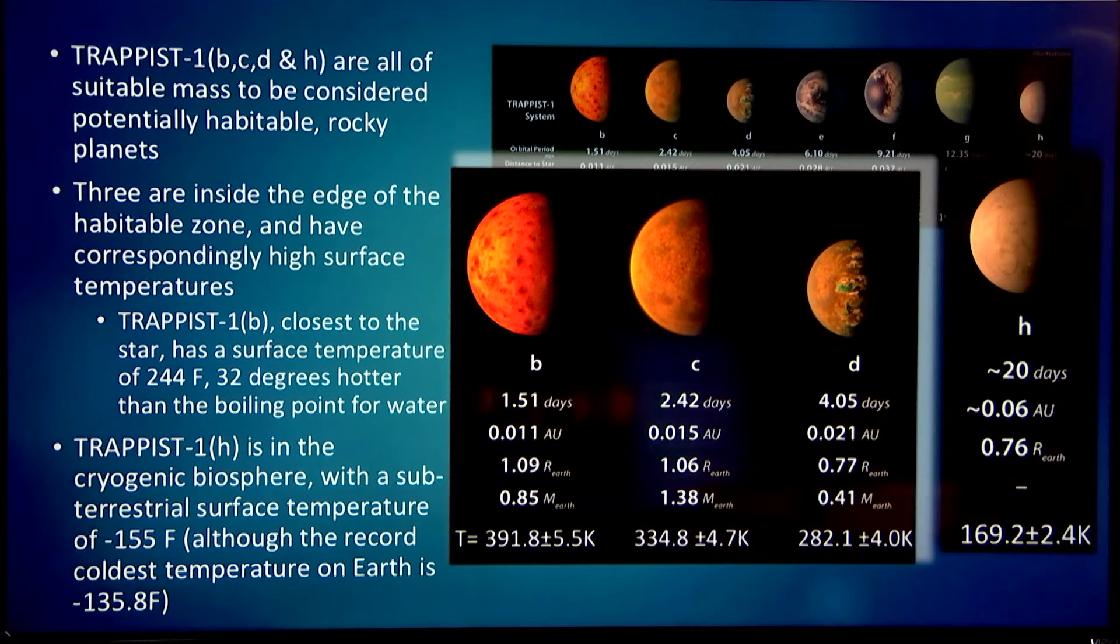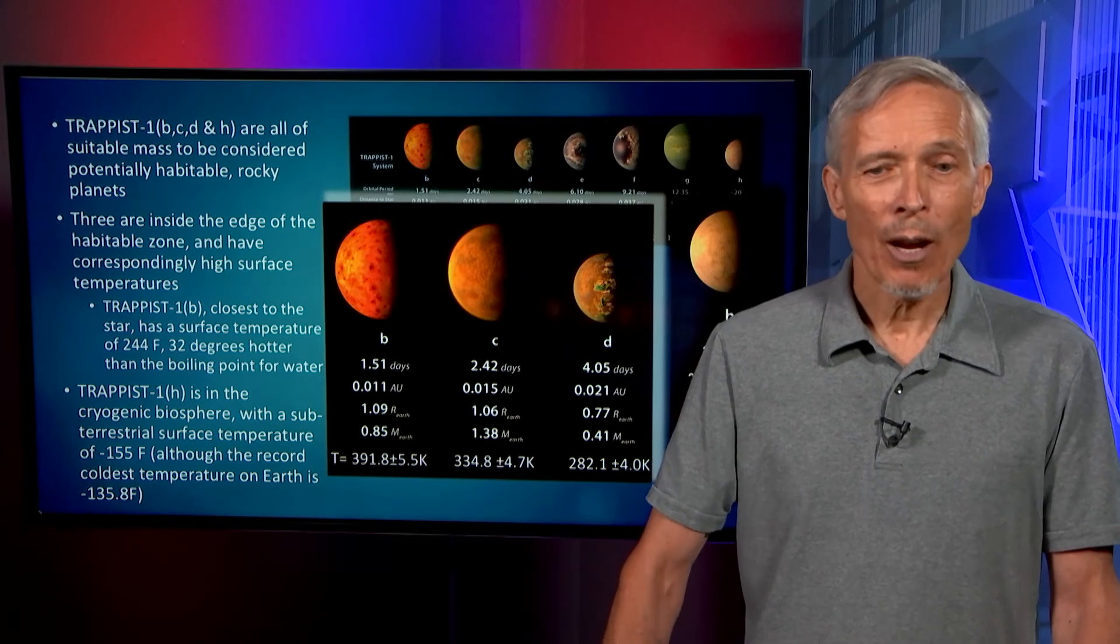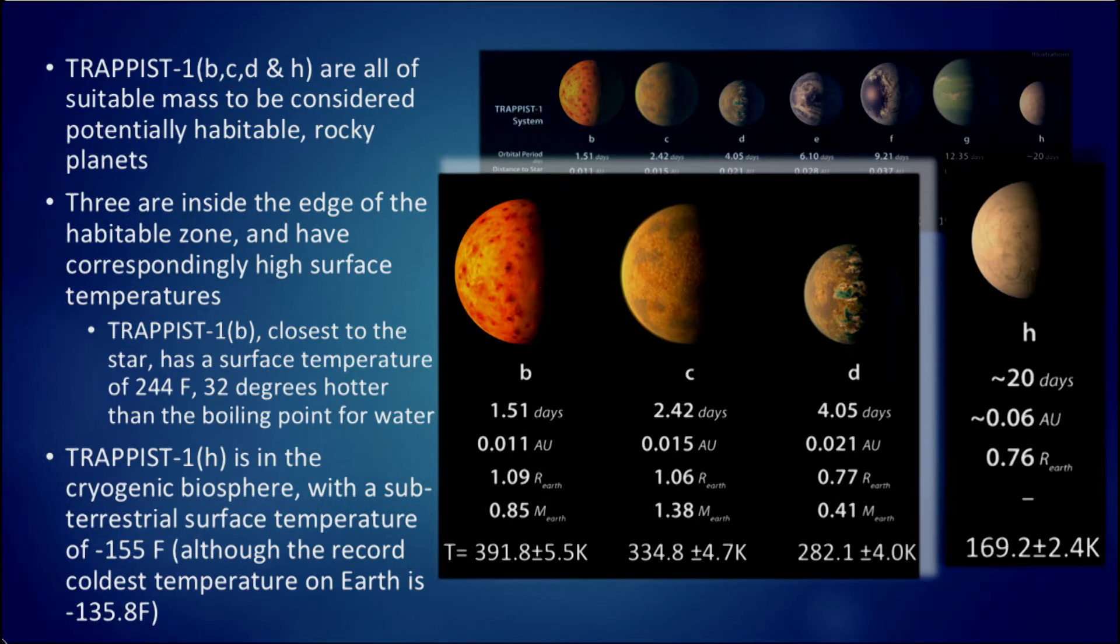Three are inside the edge of the habitable zone and have correspondingly high surface temperatures. TRAPPIST-1b, closest to the star, has a surface temperature of 244 degrees Fahrenheit, just hotter than the boiling point of water. Tantalizing, but interesting. Actually on Earth, there are biological microbial organisms that can exist in this temperature of superheated water, so that temperature alone does not rule out biology. TRAPPIST-1H is in the cryogenic biosphere with a subterrestrial surface temperature of minus 155 degrees Fahrenheit. That's also impossibly cold, only slightly different from the coldest temperature recorded on Earth. We don't know of life that can exist in any kind of situation like that. Perhaps it goes into cryogenic wait state, hoping for small periods of time when it can be hotter. But at the moment, that would take it beyond the pale for biology.